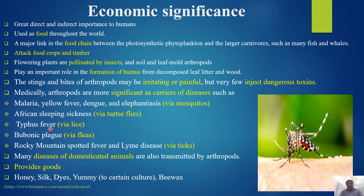Typhus fever is spread by lice, and Bubonic plague is spread by fleas. Rocky Mountain spotted fever and Lyme disease are spread by ticks. Many diseases of domesticated animals are also transmitted by arthropods. Arthropods also provide food goods such as honey, silk, dyes, and beeswax, which are delicacies in certain cultures.